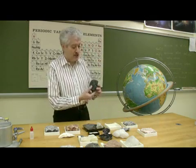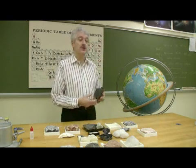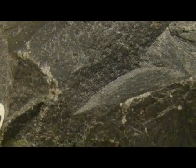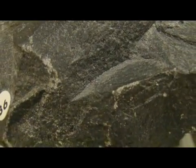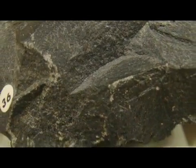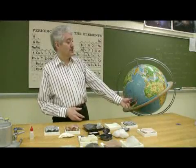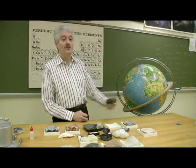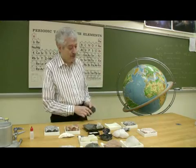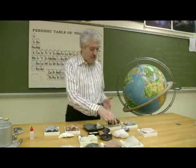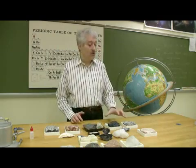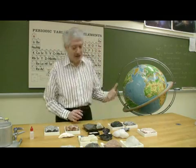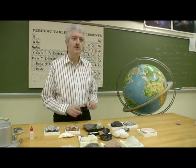On the other hand, this igneous rock called basalt formed at the surface. The magma cooled rapidly, and there wasn't enough time for crystals to form. We hold this at arm's length and it looks completely uniform. We call this texture aphanitic. So the two basic textures of igneous rocks are phaneritic and aphanitic, though there are some others.